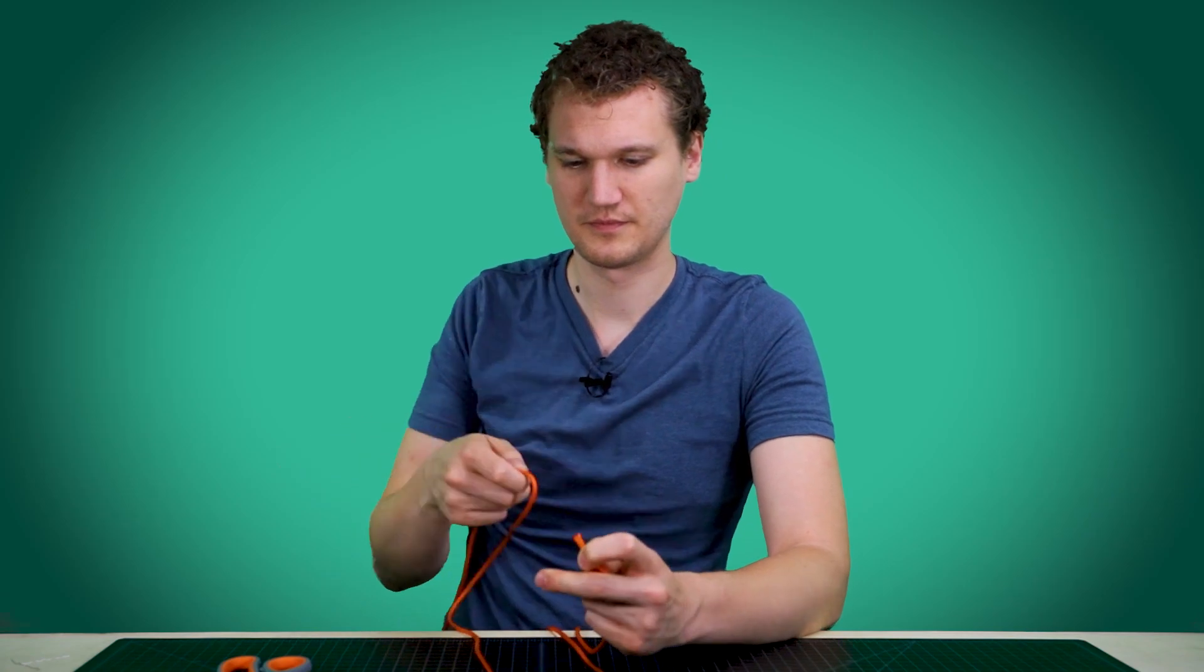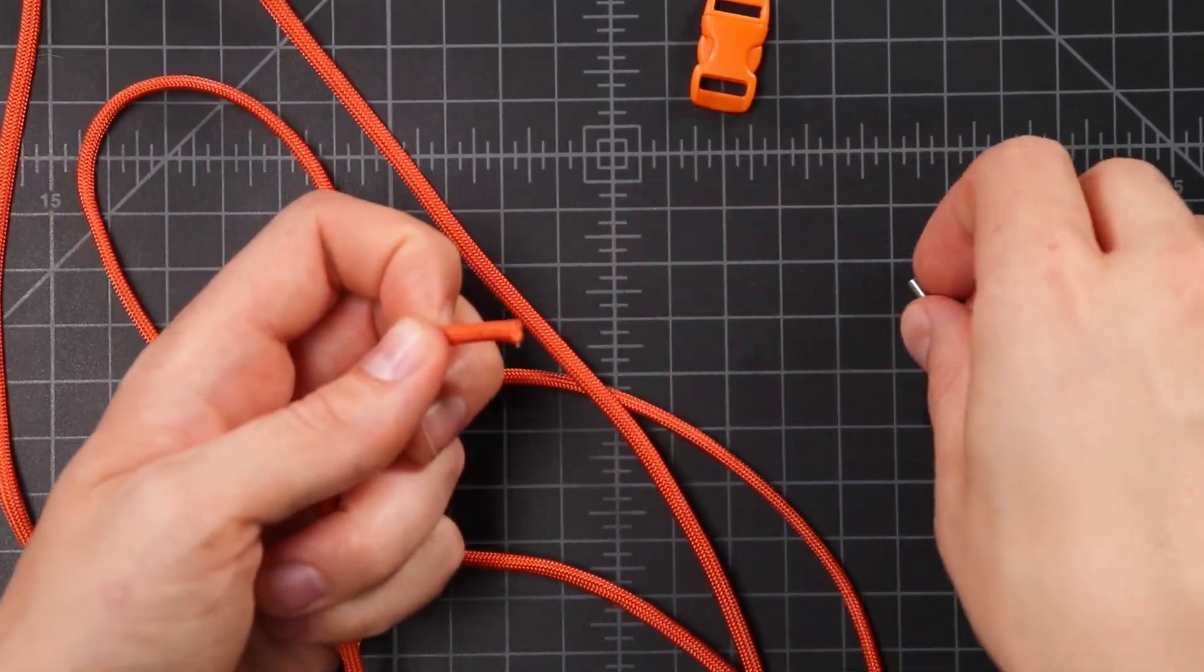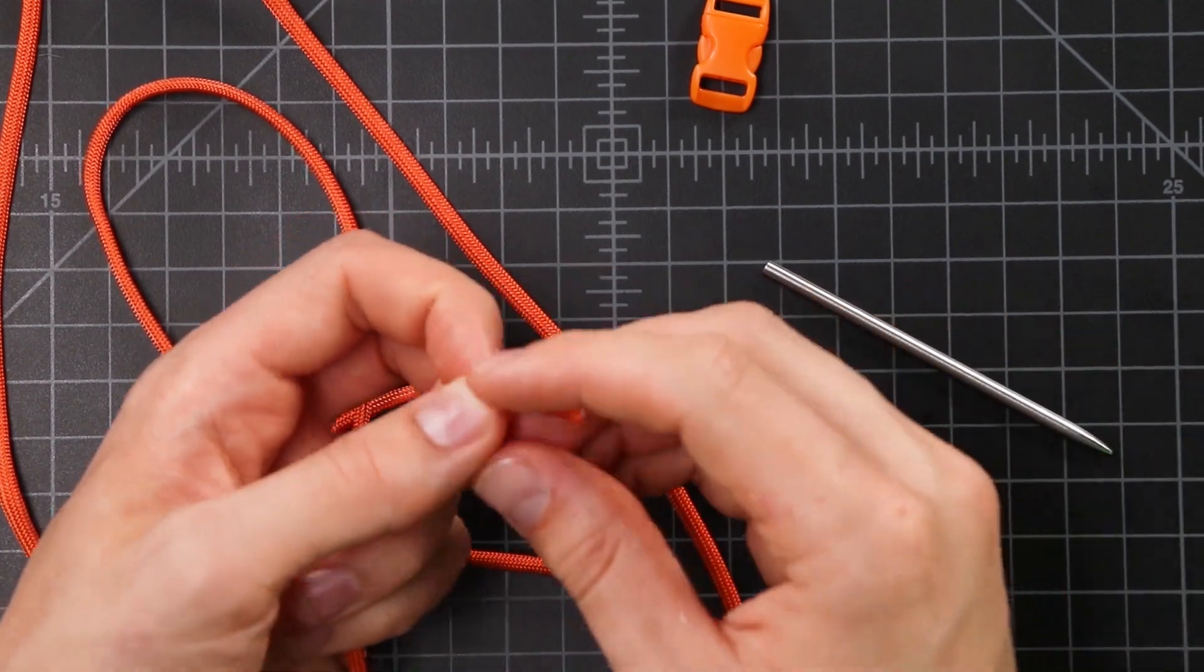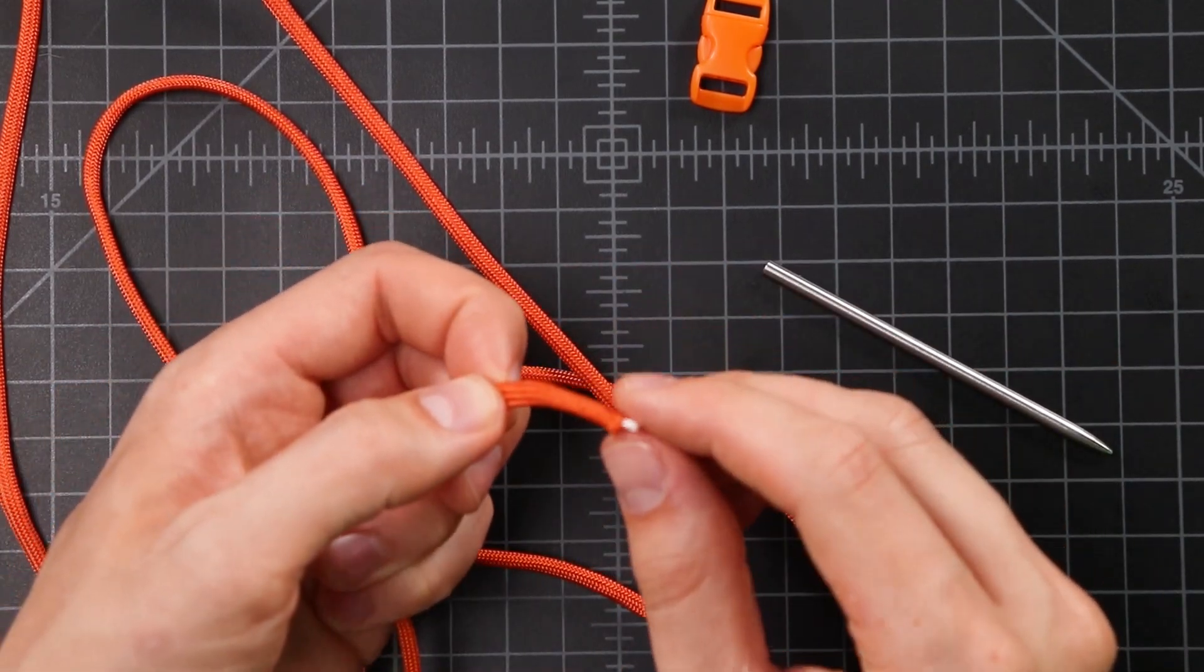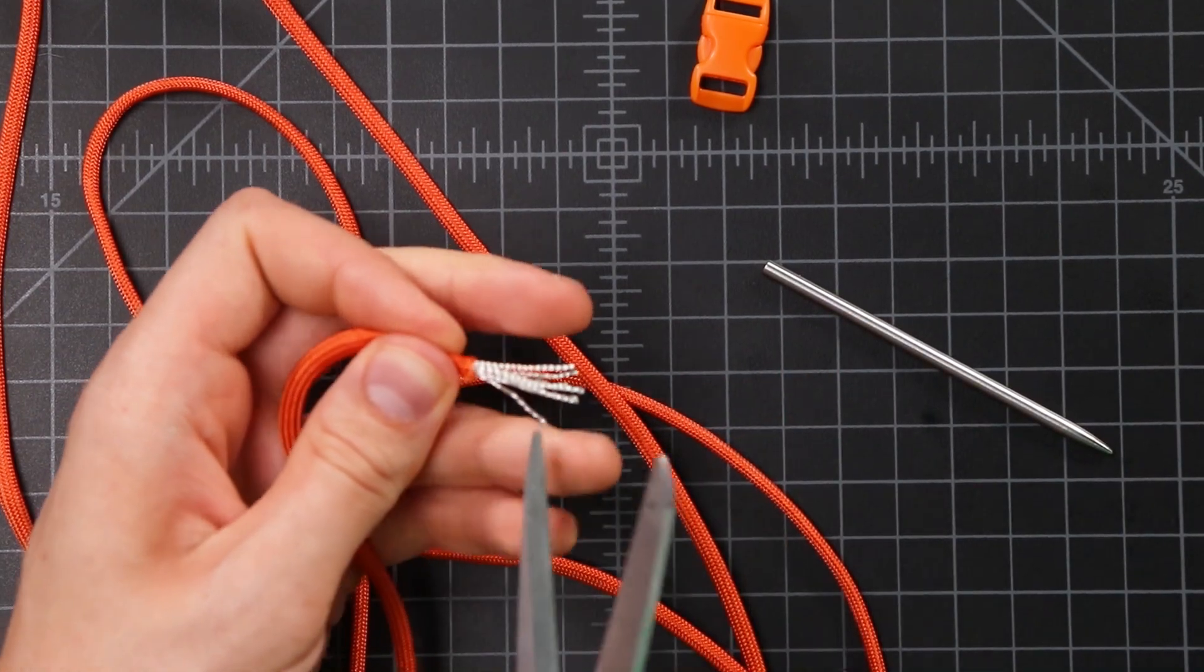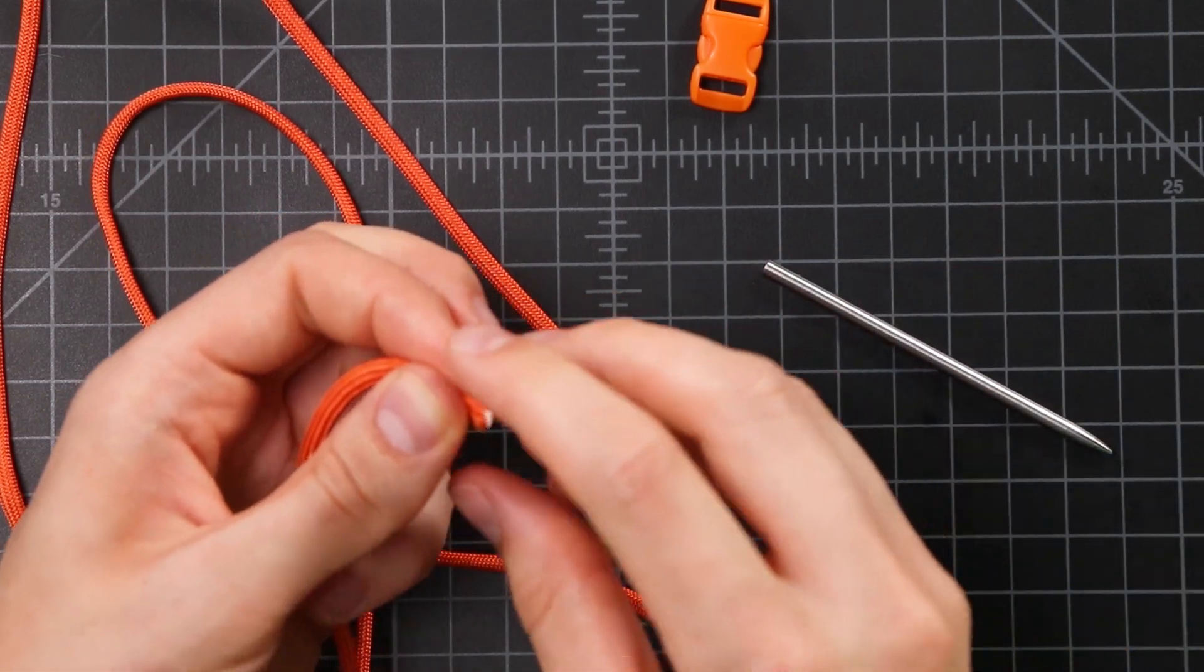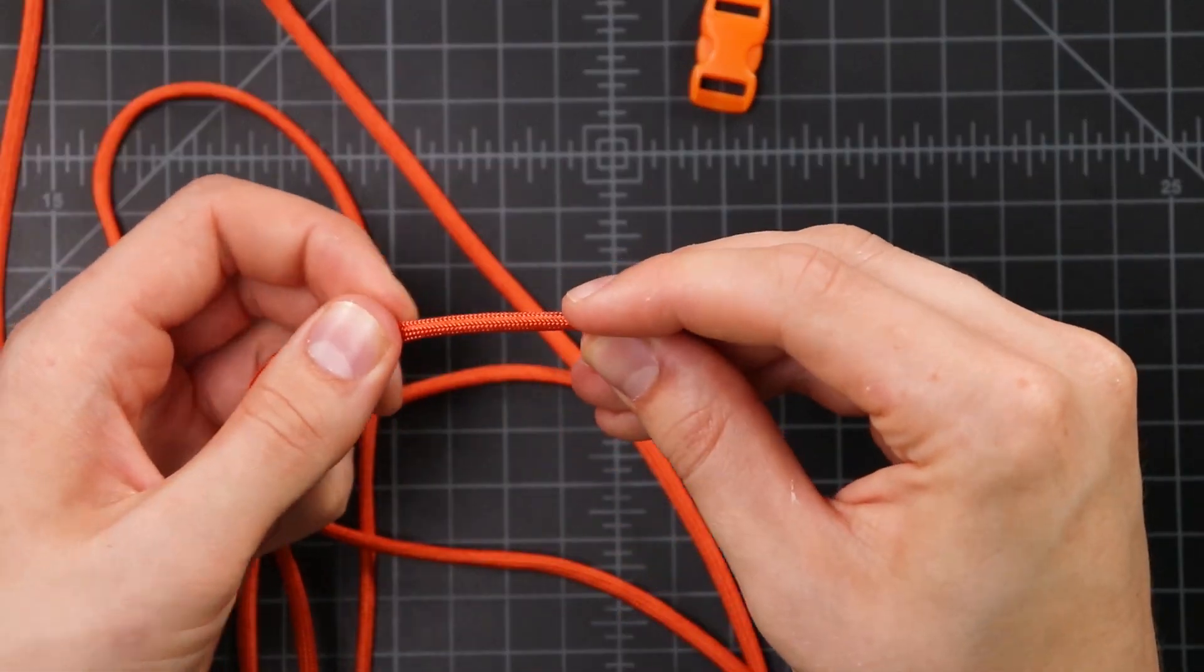So now we'll grab our other end, and you want a fresh end on this one as well. If you're using a Type 3 FID, you can just thread the FID on like normal, but since I'm trying to squish it into a Type 2, when this is actually a Type 3 paracord, I want to pull the end back on this side as well, and get rid of some of those inner strands. This will make my end narrower for threading onto the FID.